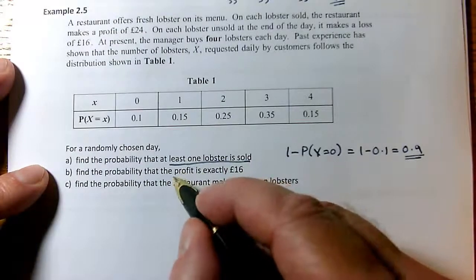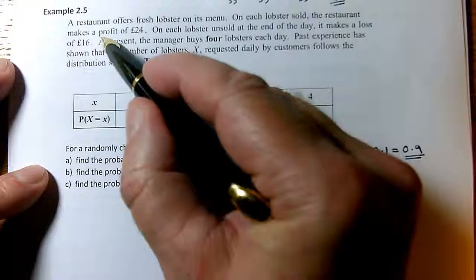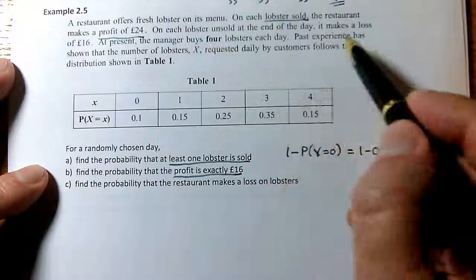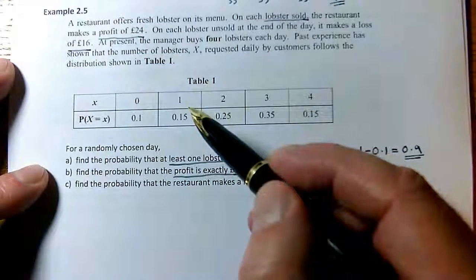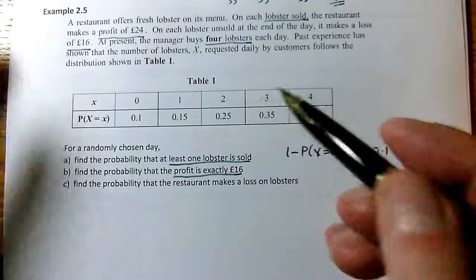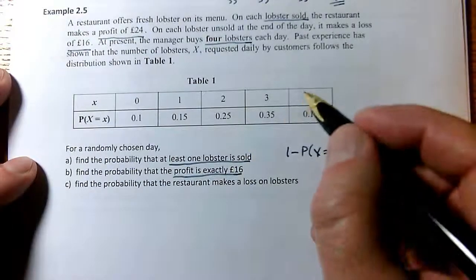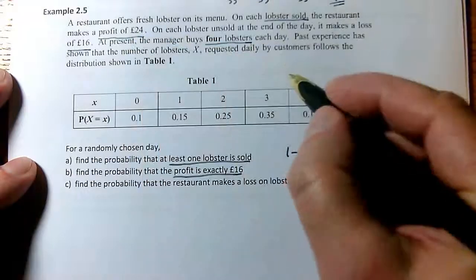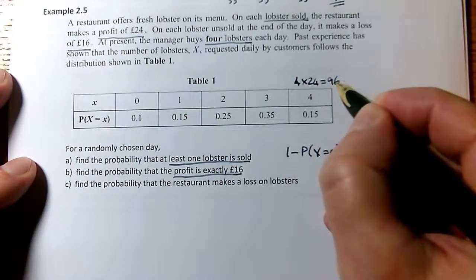Now the idea that the profit might be exactly £16. I need to realize that there's a profit of £24 for each lobster they sell, but the leftover lobsters, the ones they don't sell, make a loss of £16. And what it doesn't say in the table, but it says here, is that we buy four lobsters. So there are four lobsters, each one is going to be either sold or not. So if I sell all four, my profit would be four lobsters times £24. So my profit, four times 24, is £96.